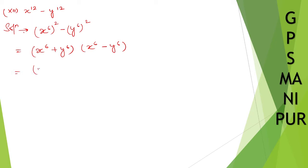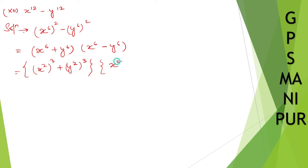Further, I can write x to the power 6 as x cube whole square, and similarly y to the power 6 as y squared whole cube. And the other factor, x to the power 6, can be written as x cube whole square minus y cube whole square. You can approach it either way, provided you don't miss out any formulas.